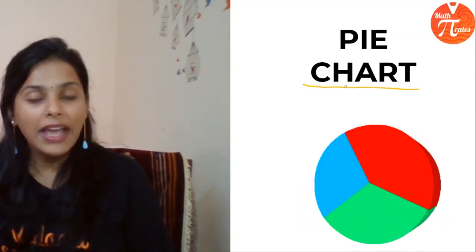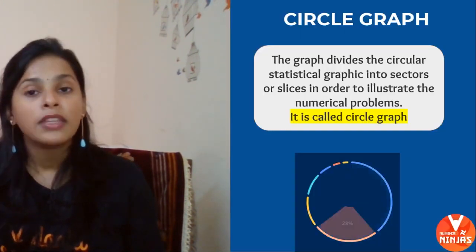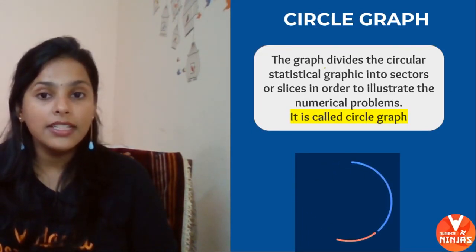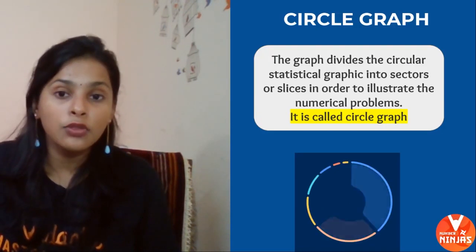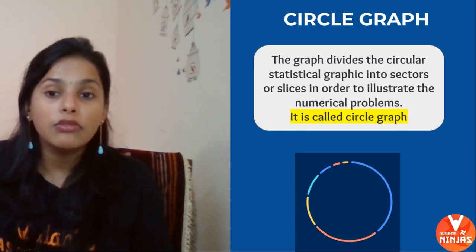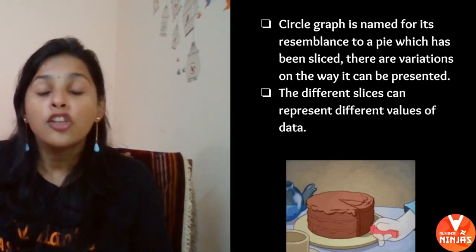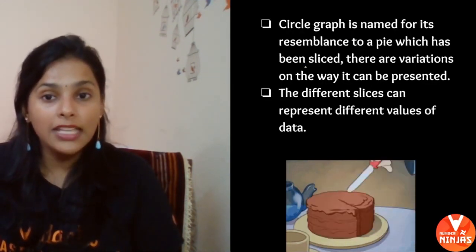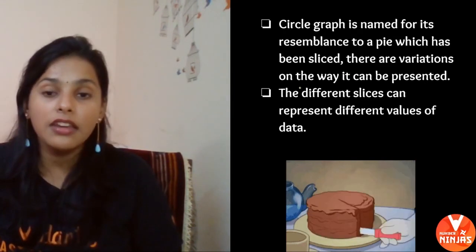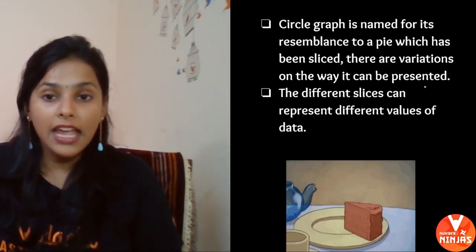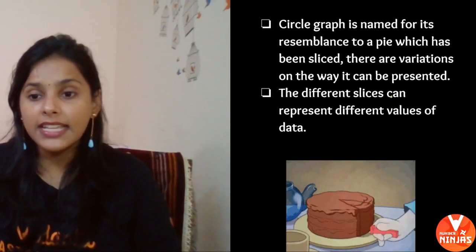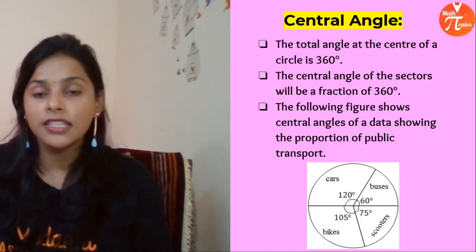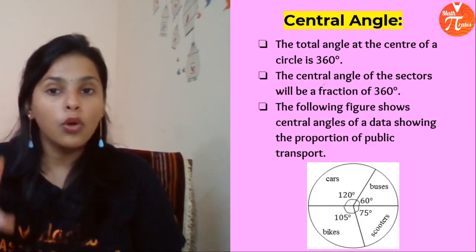Our next representation is pie chart. Pie chart is in the form of a circle, so this is also called circle graph. We divide the circular statistical graphic into sector slices to illustrate numerical problems. Circle graph is named for its resemblance to a pie which has been sliced. There are variations on the way it can be represented. The different slices can have different values of the data.